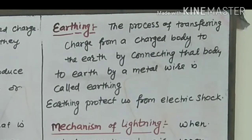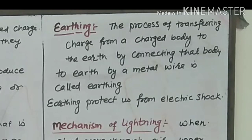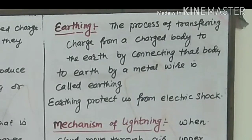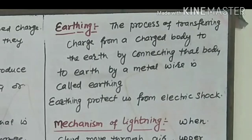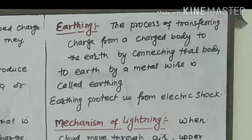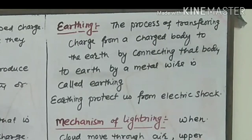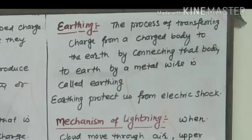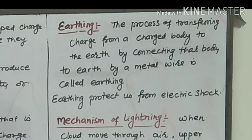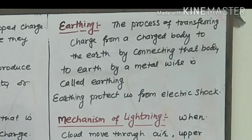Earthing protects us from electric shock. Our big buildings are earthed so that if there is a way for the charge to leak, the charge of the building goes into the land and the building is shockproofed against electric shock.